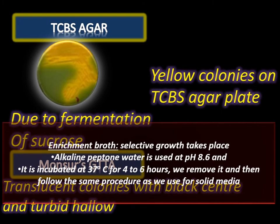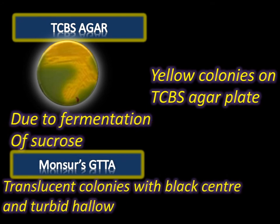On Monsur's GTTA medium, translucent colonies with a black center and turbid halo are produced due to reduction of tellurite. Gelatin is also liquefied in Monsur's GTTA.